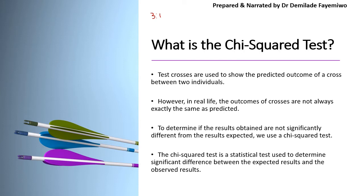When we do such crosses in real life we don't necessarily always get this ratio. For example, take sickle cell anemia — a genetic trait where people usually inherit the recessive allele from both parents to express the trait. If one parent was heterozygous — let's say A being the normal allele and S being the sickle cell allele — and they were crossed with someone else who has the exact same genotype.